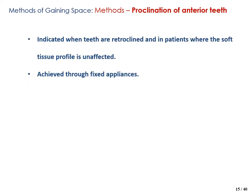The last method of gaining space is proclination of anterior teeth. It is indicated when teeth are retroclined and in individuals where the soft tissue profile is unaffected. This can be easily achieved through fixed appliances.